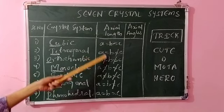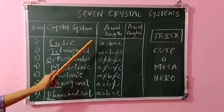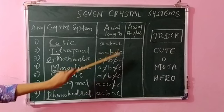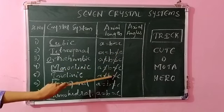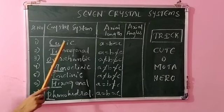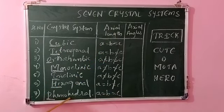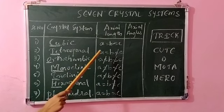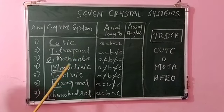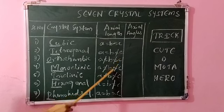To summarize axial lengths: in cubic and rhombohedral, edge lengths are all equal. In tetragonal and hexagonal, a = b but not equal to c. In orthorhombic, monoclinic, and triclinic, all axial lengths a, b, and c are unequal. This is the easy way to remember the axial lengths for all seven crystal systems.